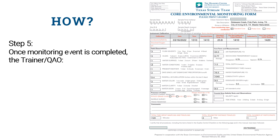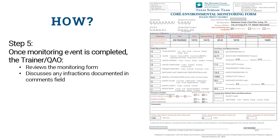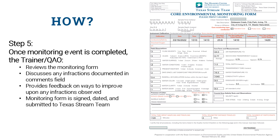Step five: after the monitoring event has been completed, the trainer and/or quality assurance officer conducting the session reviews the completed monitoring form to ensure proper documentation of all applicable fields and discusses any infractions observed with the citizen scientist. Any feedback for improvements is also discussed. Once the trainer and/or quality assurance officer is satisfied with the technique used for implementation of the monitoring protocols, the form is signed, dated, and submitted to the Texas Dream Team.